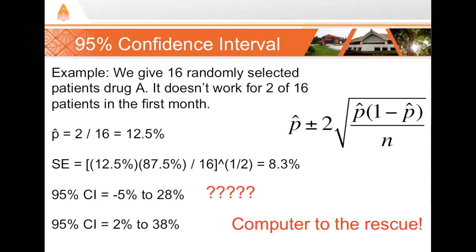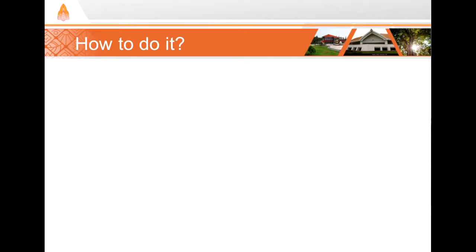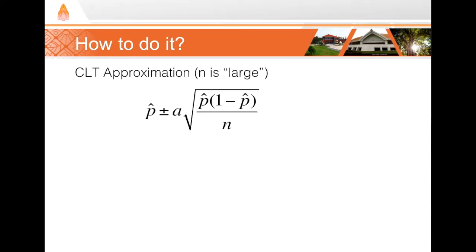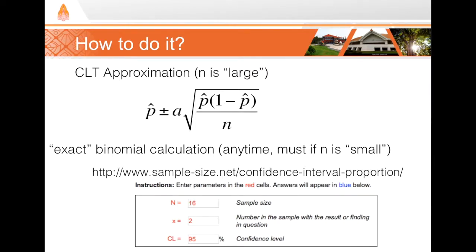To summarize: you can find a sample proportion's confidence interval two ways. First, use the central limit theorem formula — as long as n is large as defined, this works fine. Second, compute it using exact binomial results, which requires a computer but is applicable anytime and must be used when n is small. It's not easy in Excel, so use the recommended website: type in the sample size, the number of responses, and the desired confidence level. You could also use any stats program like Stata. At this point you should be able to answer question 3 on your inferential statistics practice worksheet. In the next parts of section 19 we'll talk about hypothesis testing.